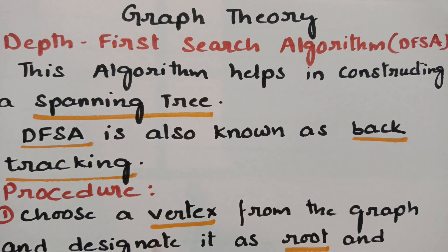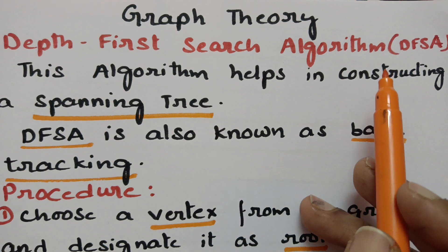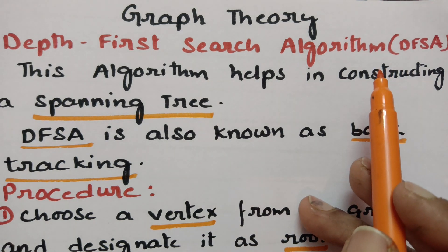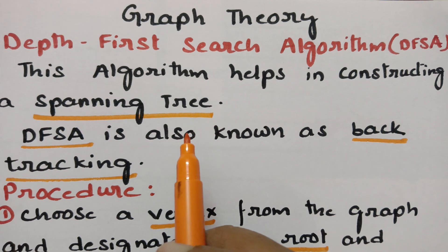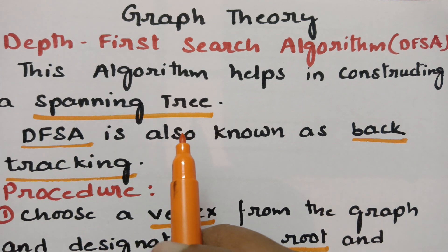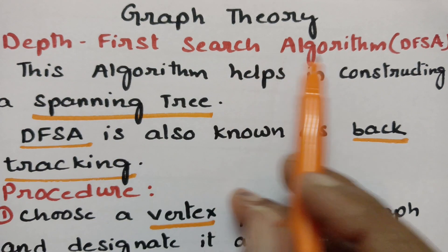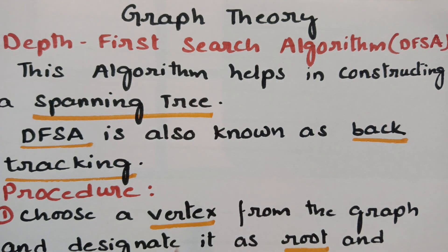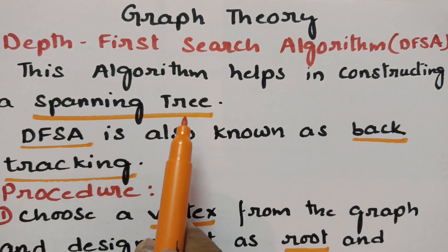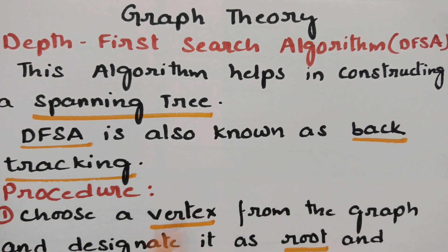Today's video is on the depth first search algorithm. There are two algorithms for finding or constructing the spanning tree — the first one is breadth first search algorithm, which I've made a video on. In today's video I am going to explain the depth first search algorithm. This topic is from graph theory, and this algorithm helps in constructing a spanning tree. DFS is also known as backtracking.